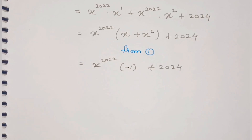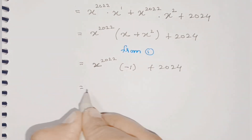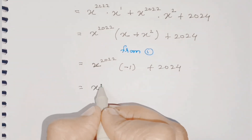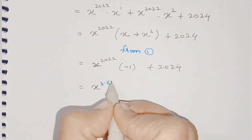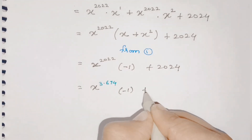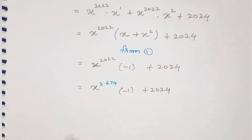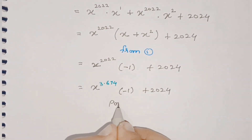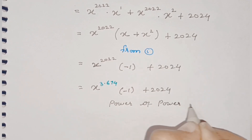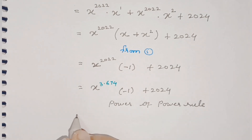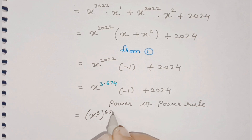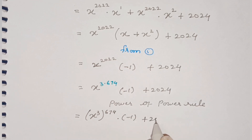Further, we know the value of x cubed, so we split 2022 as a multiple of 3: x raised to (3 times 674) into minus 1, plus 2024. We apply the power-of-power rule — a raised to (m times n) equals a raised to m, whole raised to n — giving us (x cubed) whole raised to 674, into minus 1, plus 2024.